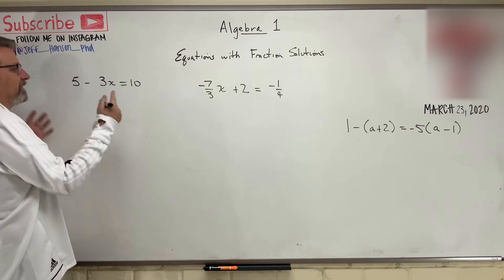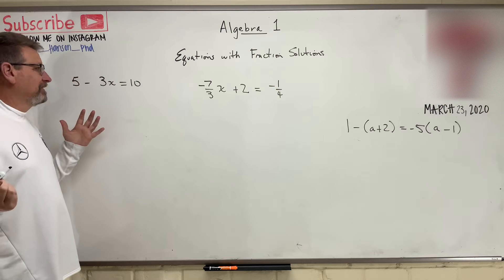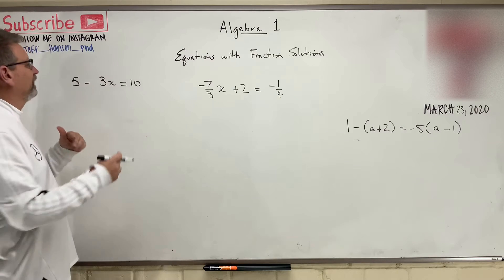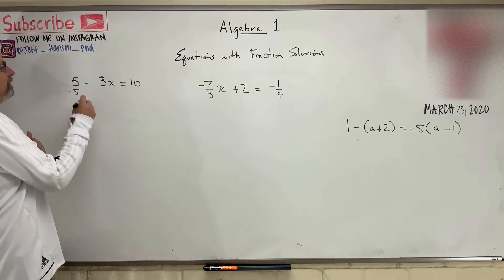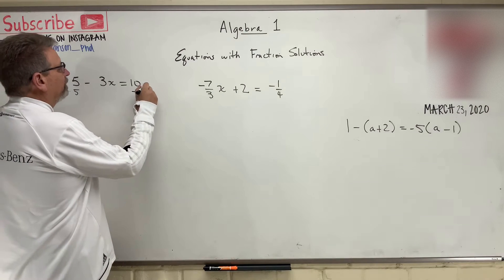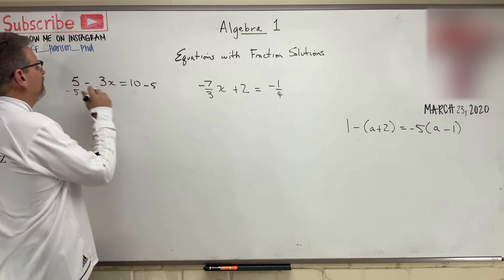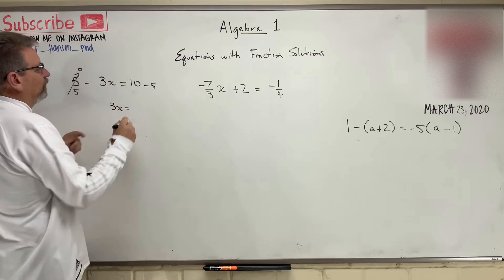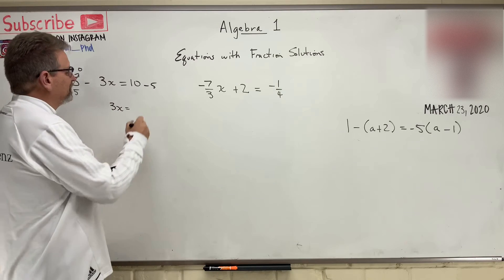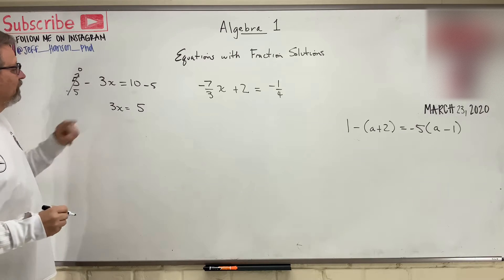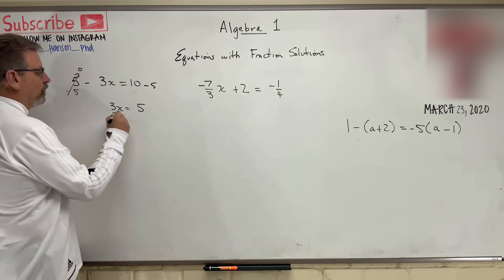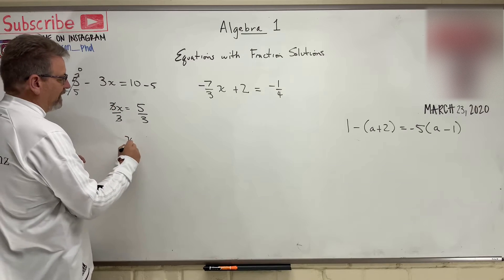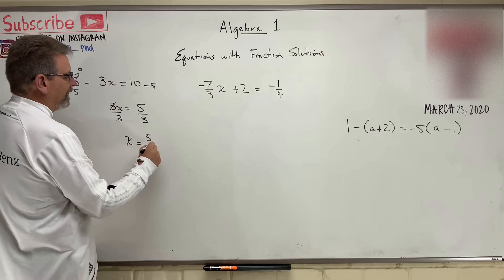What do we do first? Come on, y'all tell me. Get the x's by themselves. Get the numbers on the other side, right? So let's subtract five from this side and five from that side. That will go to zero. So we wind up with three x is equal to ten minus five, which is five. And then divide both sides by three? The threes cancel out, leaving us with x is equal to five-thirds.